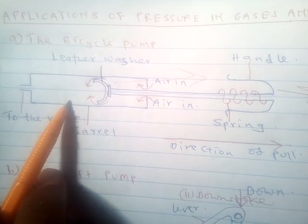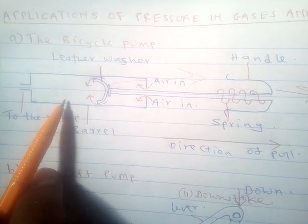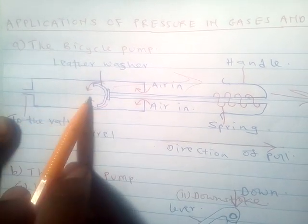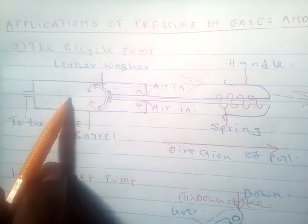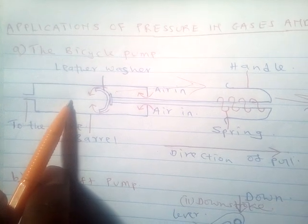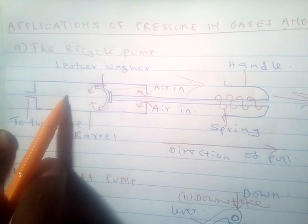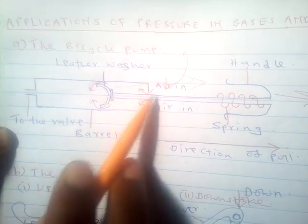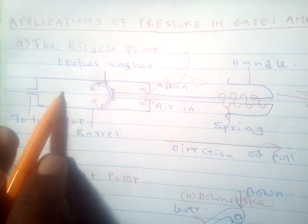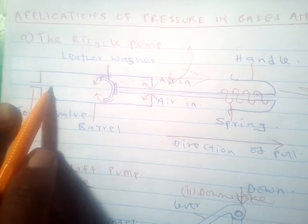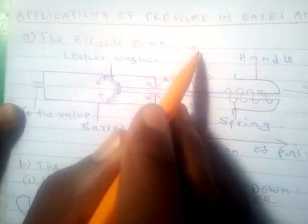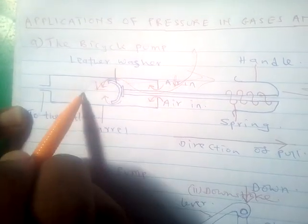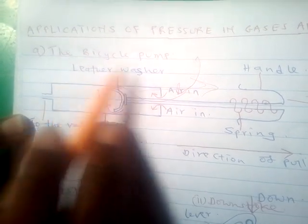You will understand this better when you learn Boyle's law, which states that pressure is inversely proportional to volume. So when the air below the leather washer expands, its pressure reduces. When the pressure inside the barrel is low, the atmospheric pressure acting from outside is now greater than the pressure of the air below the leather washer, so it pushes air into the barrel past the leather washer.